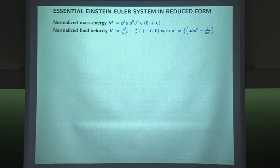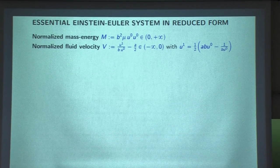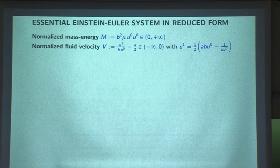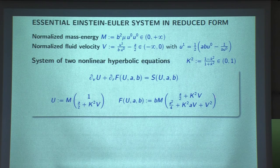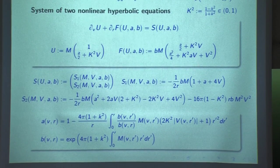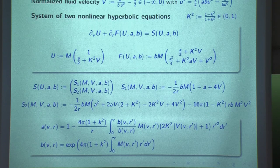Let me also remind you about the equations. We formulated the system in terms of a normalized mass-energy quantity capital M — which is the density multiplied by some component of the velocity and the metric coefficient — and a normalized fluid velocity. There is a relation between u0 and u1 which comes from the fact that the velocity vector is unit. We derive a system of two nonlinear hyperbolic equations for capital M and capital V, with a source term. To close the system, you need to say how the geometry A, B is recovered from the matter content of your spacetime.